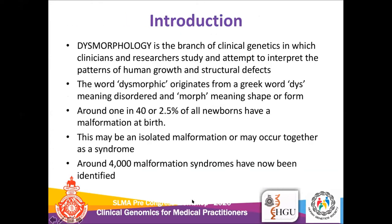Dysmorphology is a branch of clinical genetics in which clinicians and researchers study and attempt to interpret the pattern of human growth and structural defects. The term dysmorphology originates from the Greek term 'dys' meaning disorder and 'morph' meaning shape or form. In the world, about one in 40 neonates have a small dysmorphology, though they might not always be very significant. About 2.5% of all newborns have a birth malformation.